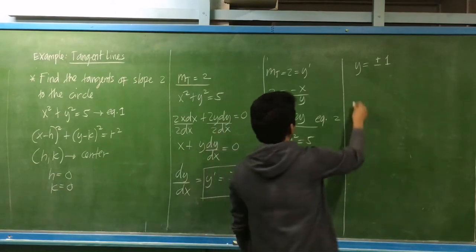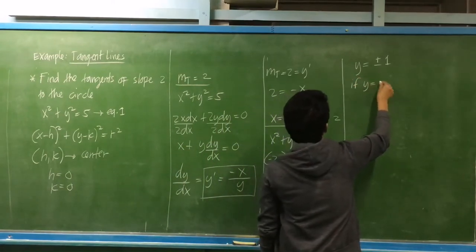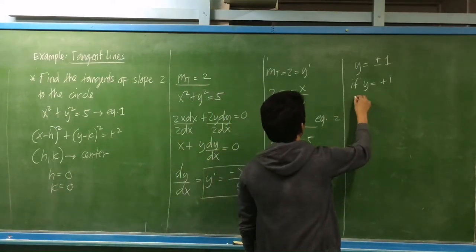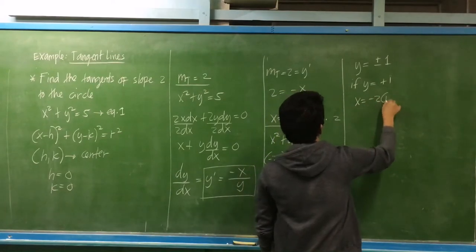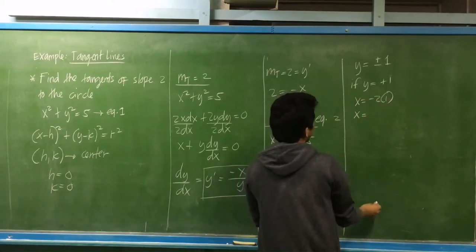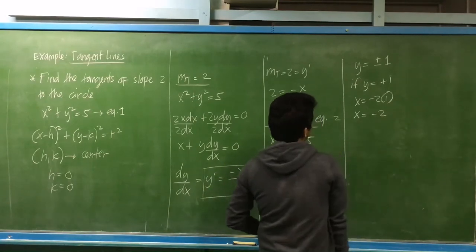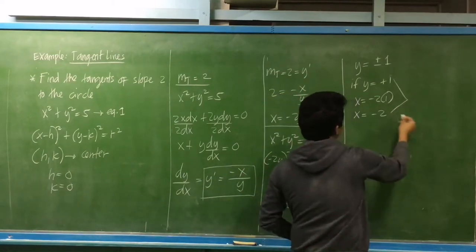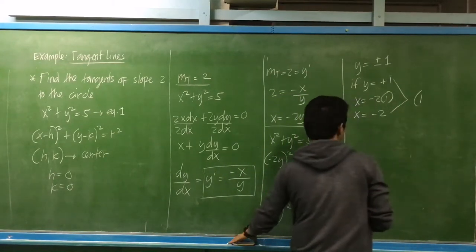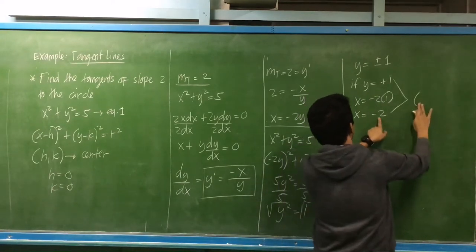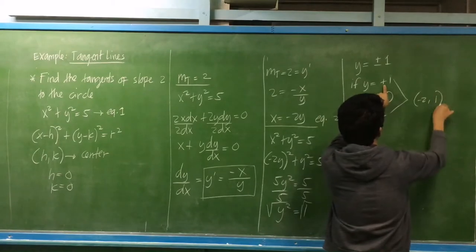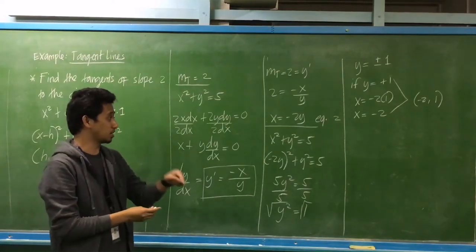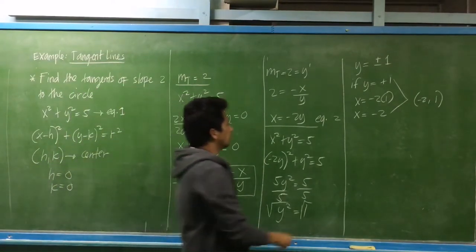Substituting these values: if y is equal to positive 1, using equation number 2, x is equal to negative 2 times 1, so x is equal to negative 2. This gives us our first point of tangency at negative 2, positive 1.